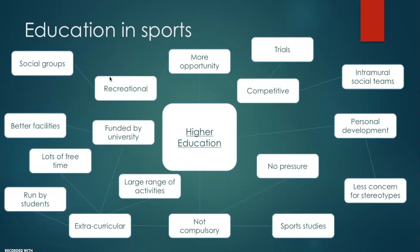Universities can have competitions within their own teams and against other universities to add to the competitive aspect. By university age, people are generally more developed and know who they are, so stereotypes are less of a concern. As girls get older, they also tend to gravitate toward more individual sports such as swimming, yoga, Pilates, and exercise classes — things they may not have been introduced to at school — and they discover these activities through friends or their own interests and continue to pursue them as they get older.